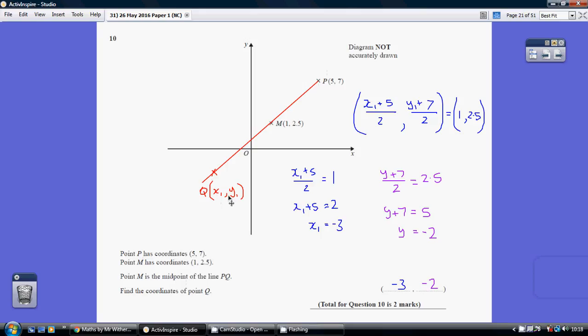When I average the x-coordinates of P and Q, so I average 5 and x1, I get 1. So I know that 5 plus x1, and then when I halve it, I get 1. So x1 plus 5, and then I halve it, gives me 1. In other words, my averaging of 5 and x1 gives me 1.